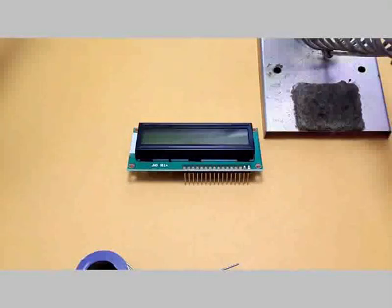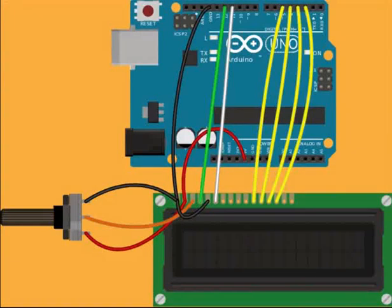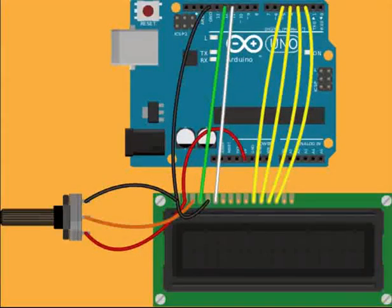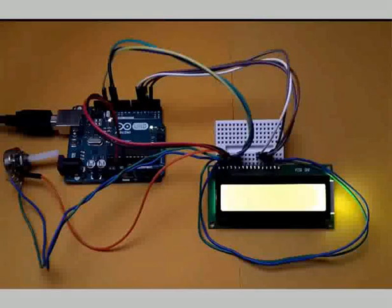Let us now switch to the circuit diagram for this experiment. The potentiometer is connected as shown to control the contrast of the LCD. A potentiometer is a small-sized electronic component used to measure voltage. Pin number 11 is connected to enable and pin number 12 is connected to register select. The read-write pin is connected to ground, which means we are writing to the LCD. We are using only four data lines for this experiment. I have set up the Arduino and LCD as per the circuit diagram.